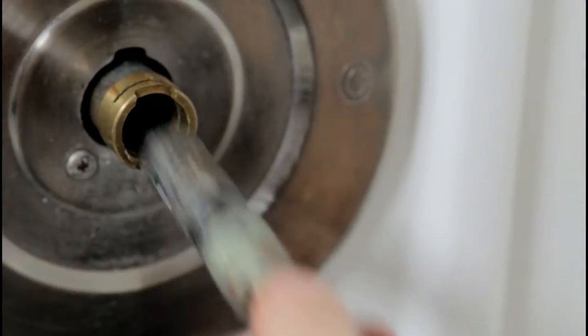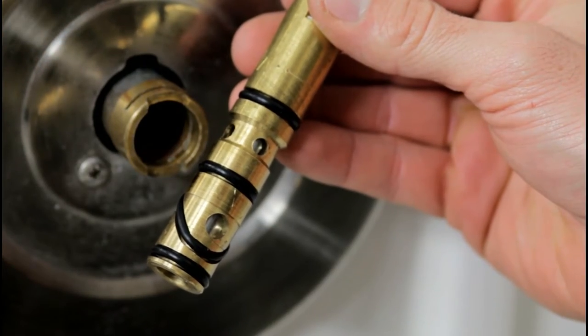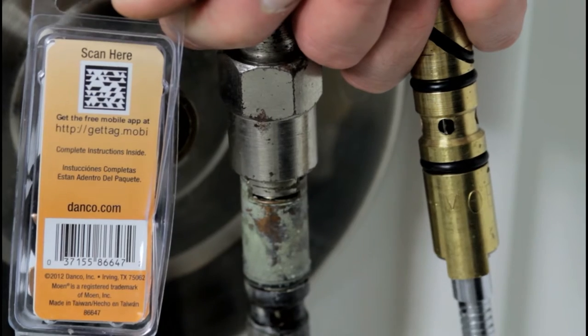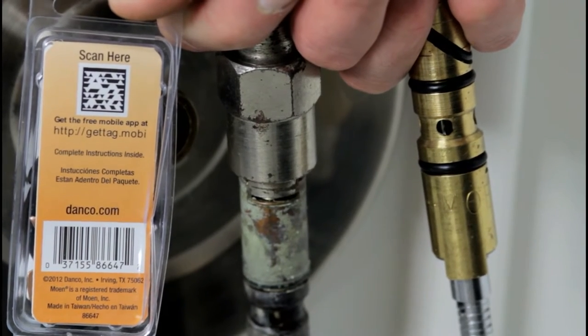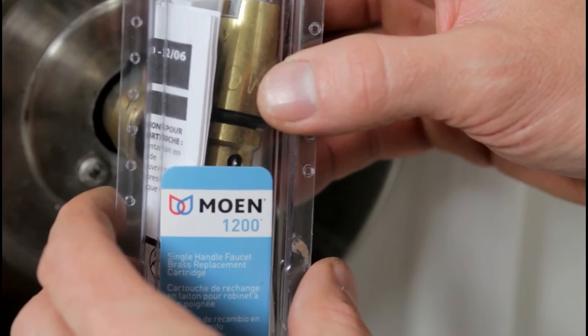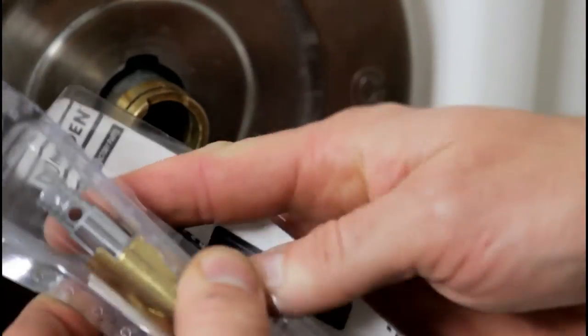You should be able to easily remove the cartridge with a pair of pliers. Now aside from using a brand new cartridge, you might be able to utilize your old cartridge and just clean it up and replace the o-rings with an o-ring kit. This could significantly save you some money and it's not too difficult to do.